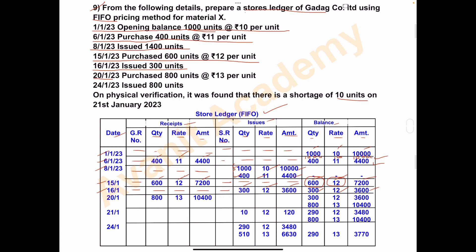Next, on 20th January 2023, purchased 800 units at Rs. 13 per unit. In receipts: GR number nil, quantity 800, rate per unit 13, total amount 800 into 13 = Rs. 10,400. Issues column nil. Write the previous balance: 300 units at Rs. 12, total amount Rs. 3,600. Then add the recent purchase: 800 units at Rs. 13, total amount Rs. 10,400.